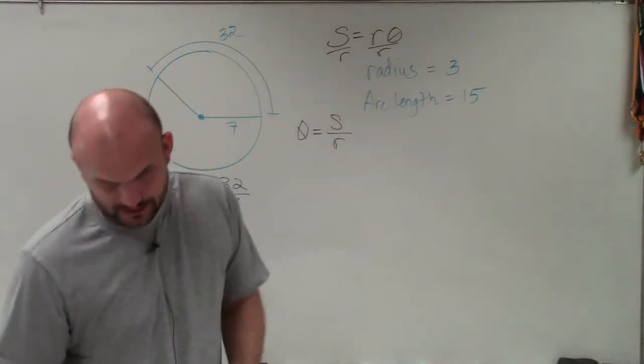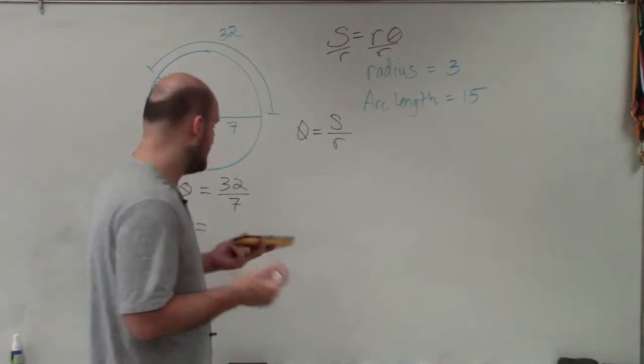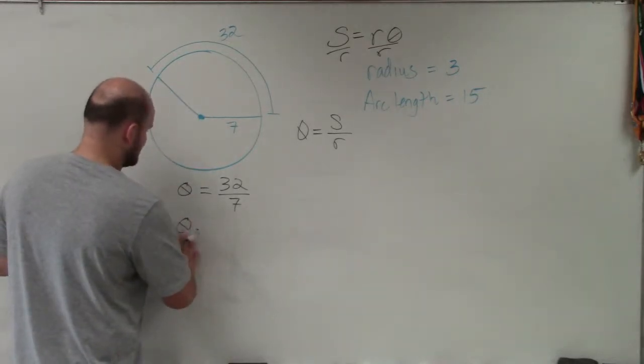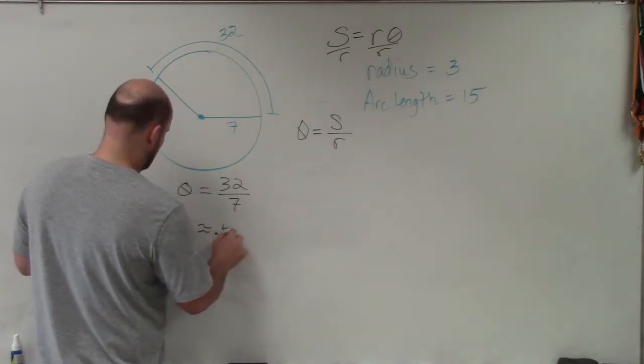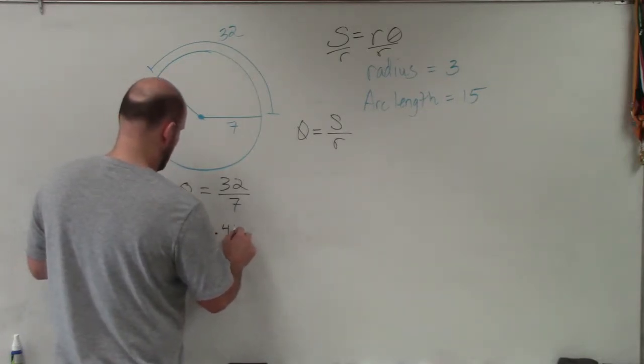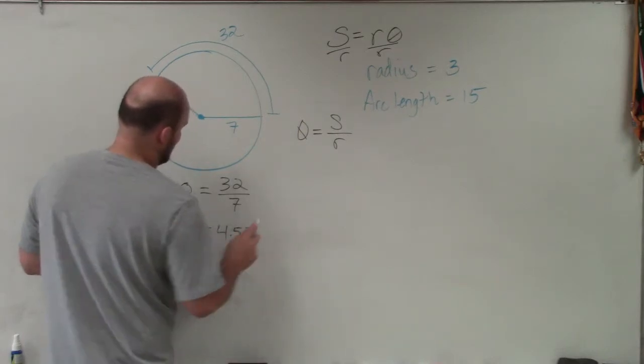now actually, I don't know the decimal for that one. So it would be 32 divided by 7, which I am going to approximate here and just round it, is going to be 4.57.